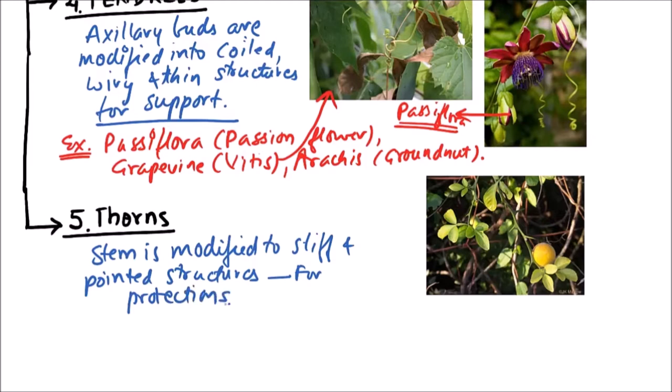These are known as thorns. The examples include Aegle that is bael, Citrus that is lemon. This is shown in the diagram.